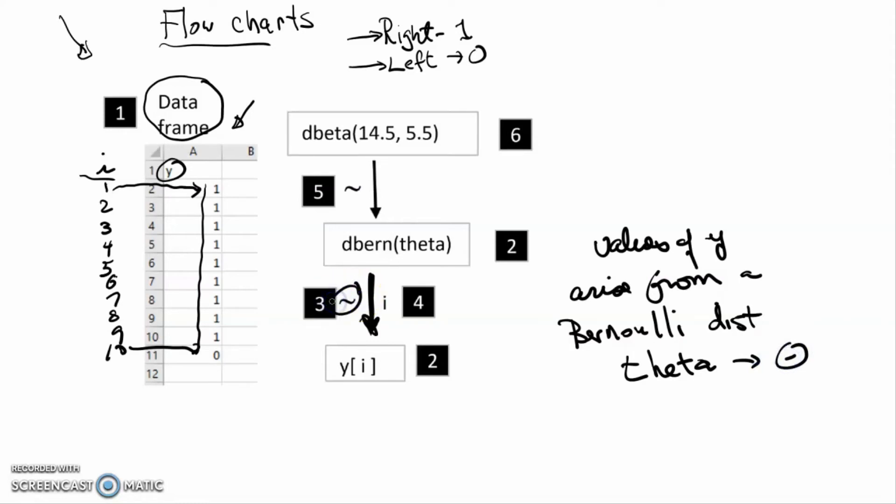We've got a tilde here. The tilde indicates we've got a distributional relationship. There is some sort of a distribution involved. In most of the flowcharts we're going to see, almost all these arrows will be accompanied by tildes.